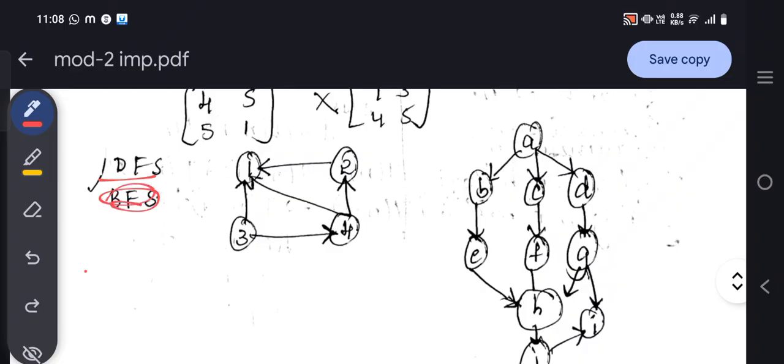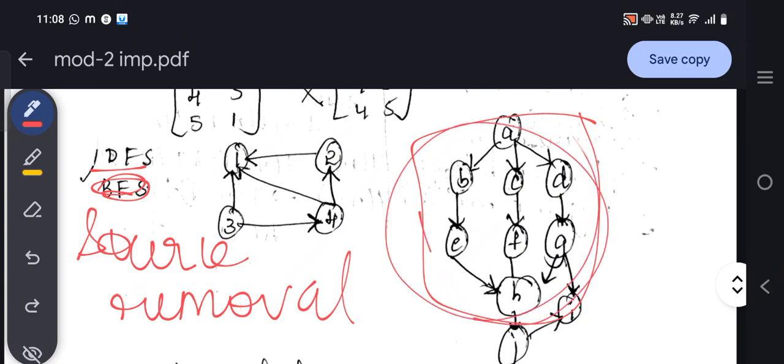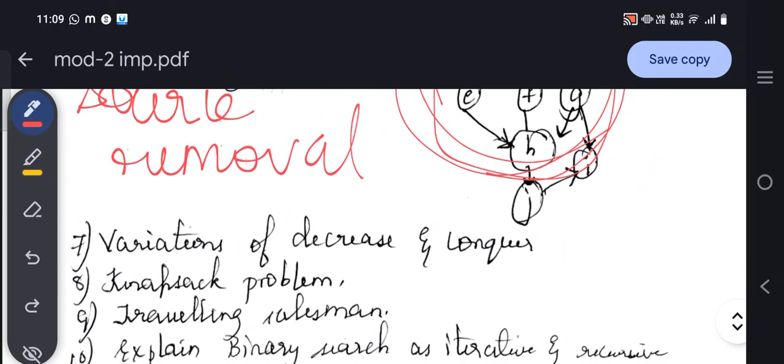Then comes the DFS. Just make a correction here: source removal method. I hope you know this method. I've given few examples, just two examples. Solve this. If you are able to solve this for DFS and source removal, then you will be able to solve all kinds of questions related to this, because this is kind of complicated. From one question, you can learn any kind of other similar problems as well.